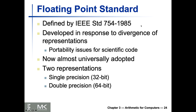That definition stems from the IEEE standardization in the late 1980s. They defined single precision as a 32-bit representation of floating point, and double precision requires 64 bits to represent. As you might guess, this increases the portability of scientific code, which deals with either very, very small numbers or very, very large numbers.